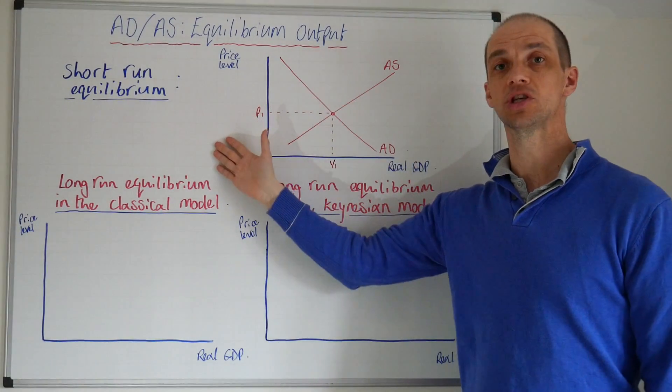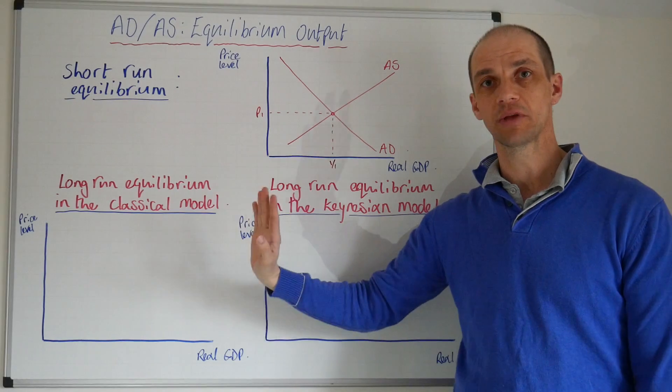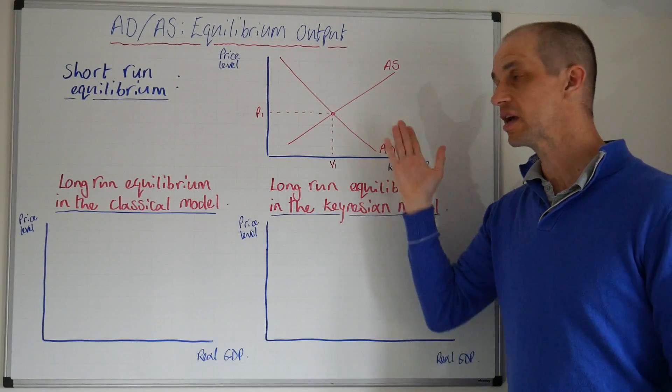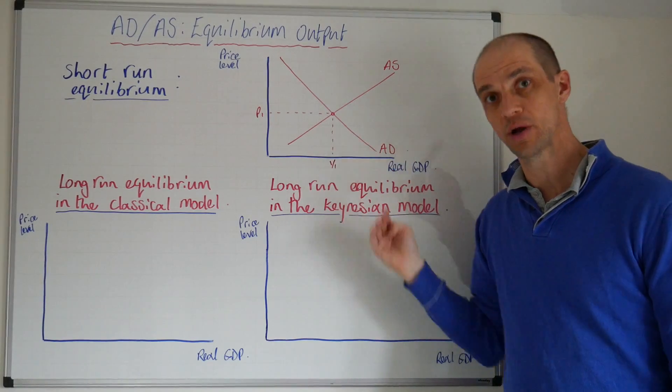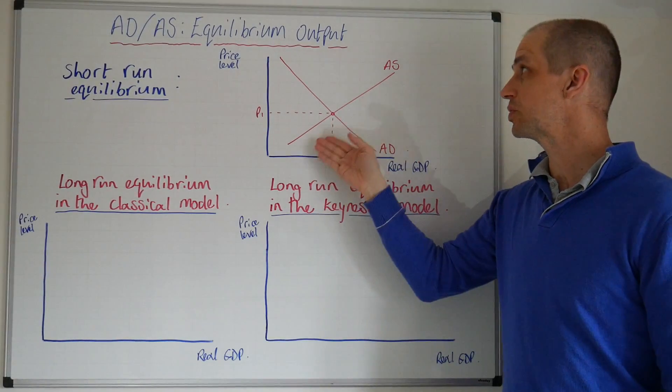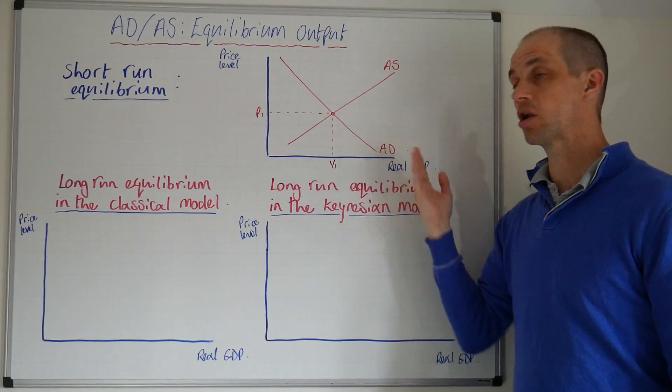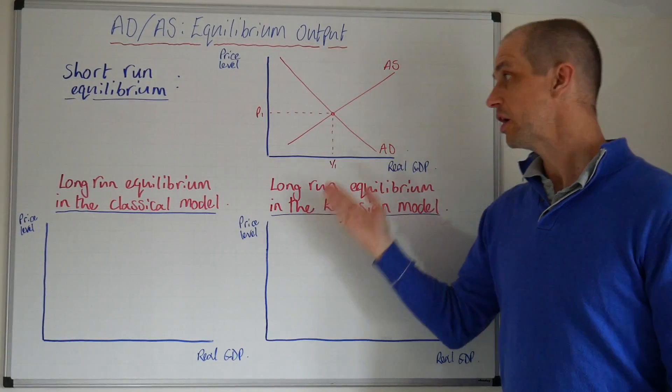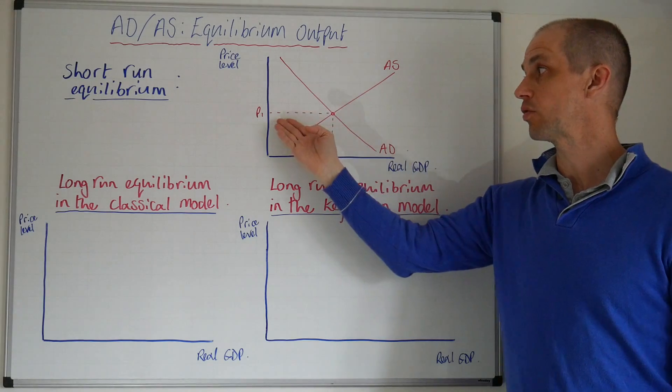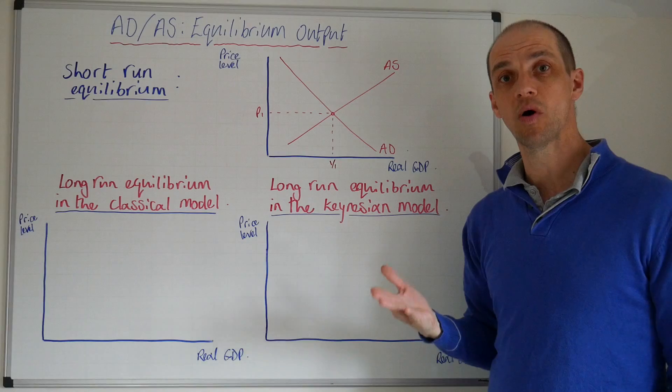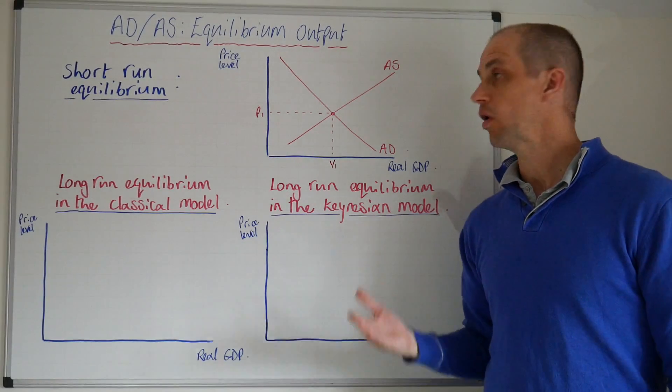So firstly when it comes to the short run, economists from the classical school of economics and the Keynesian school of economics agree that this is how the scenario is likely to play out, that we will see an upward sloping aggregate supply curve and a downward sloping aggregate demand curve. We can also see that this would correspond to an equilibrium output position equivalent to Y1 at price level of P1.